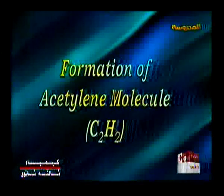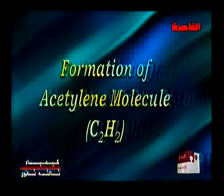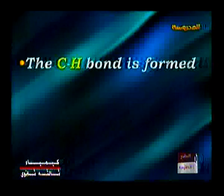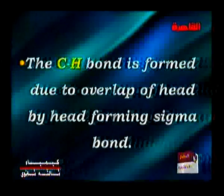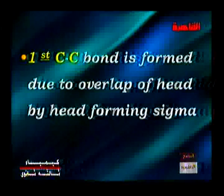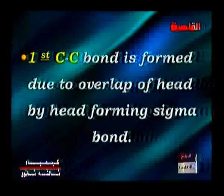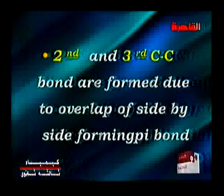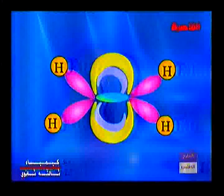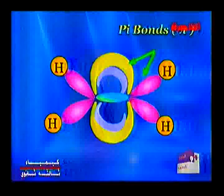The formation of the acetylene molecule: the C-H bond is formed due to head-by-head overlap, forming the sigma bond. The first carbon-carbon bond is formed due to head-by-head overlap, forming a sigma bond. The second and third carbon-carbon bonds are formed due to side-by-side overlap, forming pi bonds. As the screen shows, we have two pi bonds between the carbon atoms.